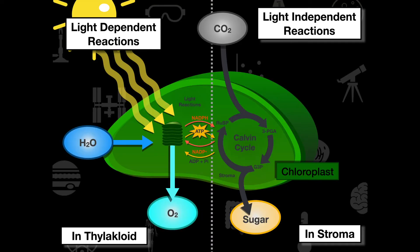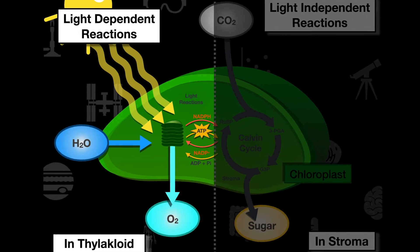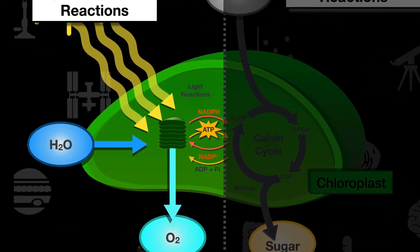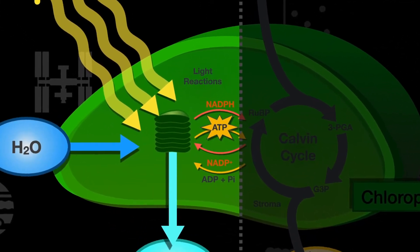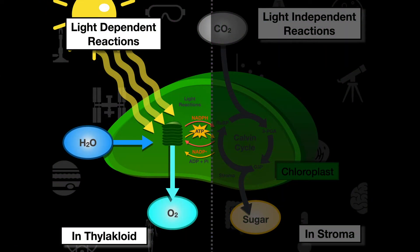We're looking at the light-dependent reactions on this side of the diagram. In the light-dependent reactions, we are taking light energy and converting it into chemical energy — NADPH and ATP — which we then feed into the Calvin cycle. The goal is to input H2O; oxygen will be an output, but we're trying to make NADPH and ATP to power the Calvin cycle in the thylakoids.